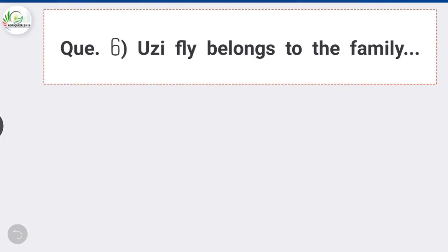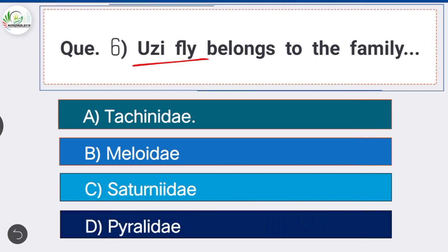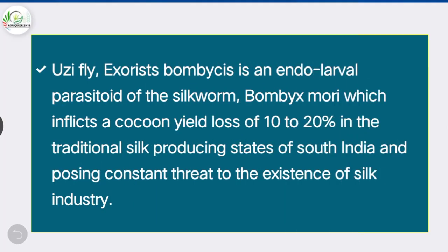Question number six: uzi fly belongs to the family — option A is the correct answer — Tachinidae. Uzi fly, with the scientific name Exorista bombycis, is an endolarval parasitoid of the silkworm Bombyx mori, which inflicts a cocoon yield loss of 10 to 20 percent in the traditional silk-producing states of South India, posing a constant threat to the silk industry.